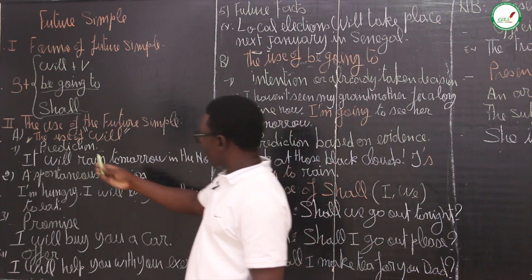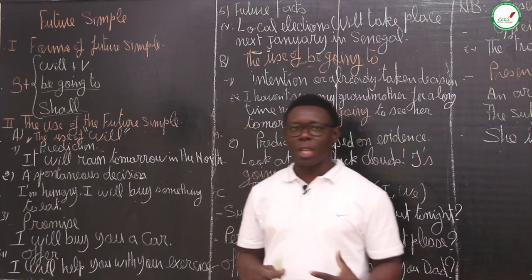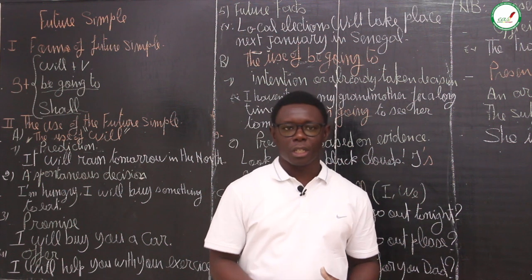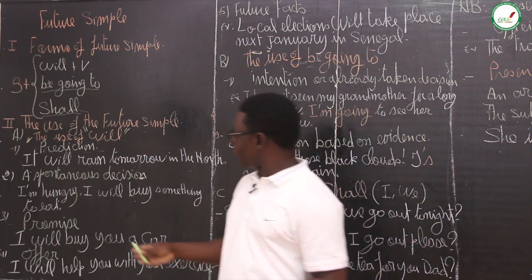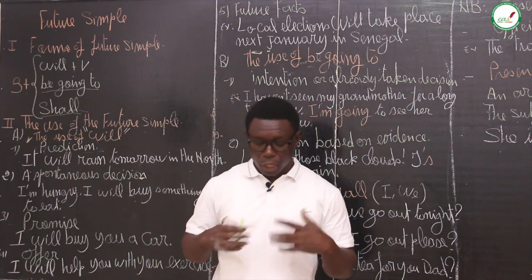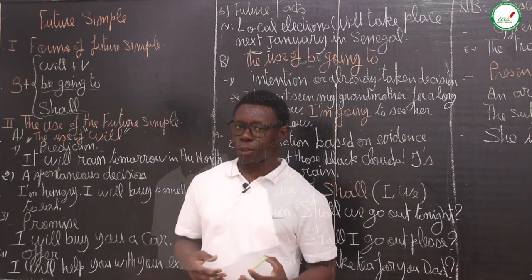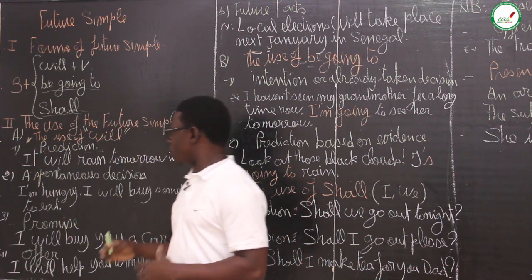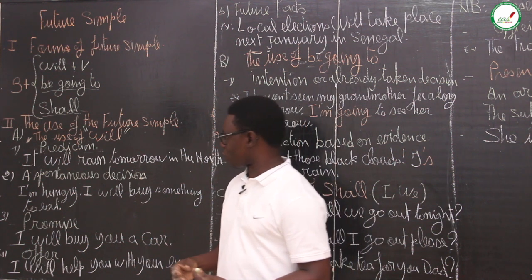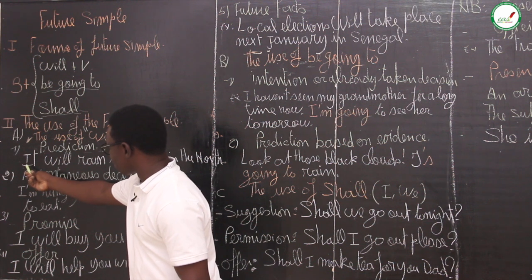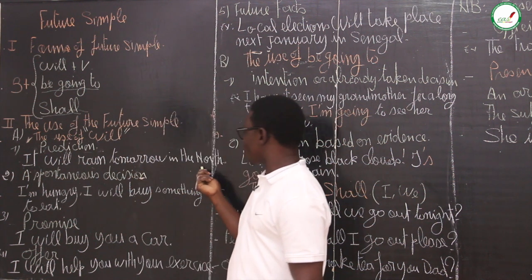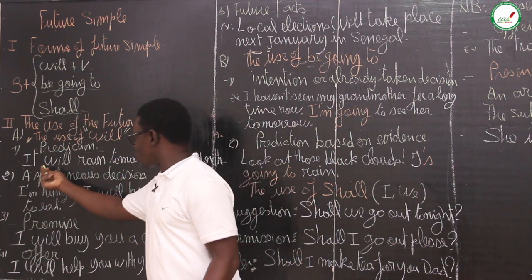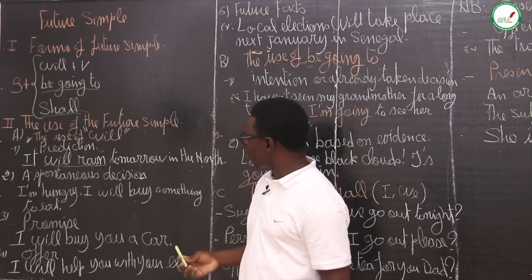Now, let us go to the use. How do we use the future simple? To start, we are going to start with 'will'. How do we use will? First, we use will to talk about a prediction — something that can happen in the future. The broadcasters most of the time use will to talk about whether it is going to rain or not. For example, we say: 'It will rain tomorrow in the north.' So, I give the prediction that it will rain tomorrow.